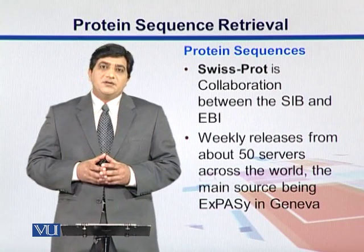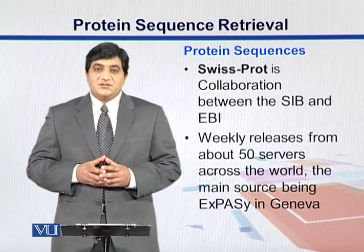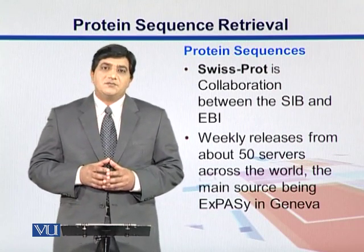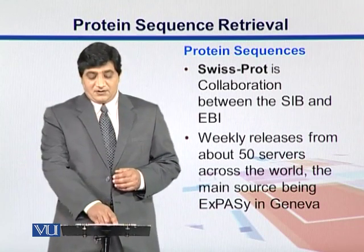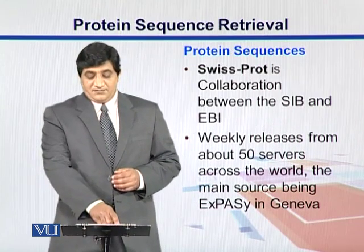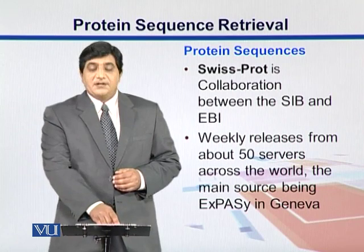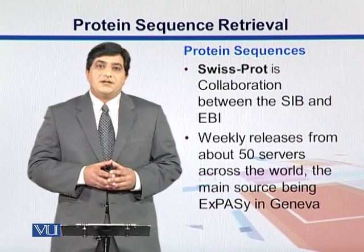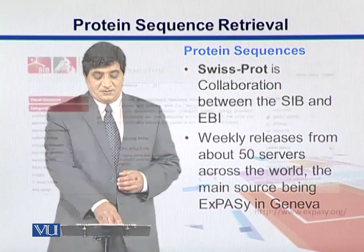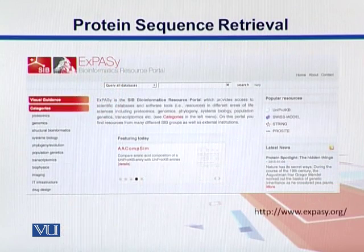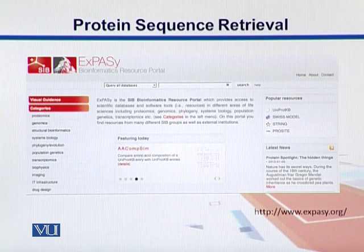SwissProt is a collaboration between the Swiss Institute of Bioinformatics and the European Bioinformatics Institute. It releases data weekly from 50 servers across the world, mainly controlled by ExPASy, the main server in Geneva. From its page you can find different structural alignments, proteomics data, and also genomic data.